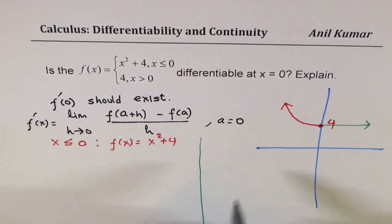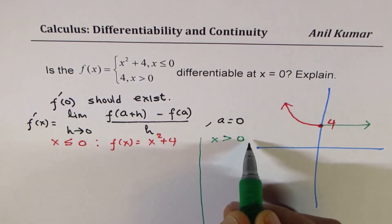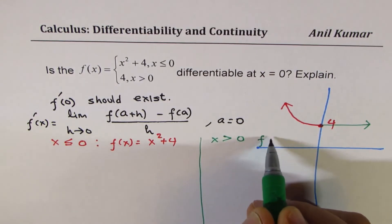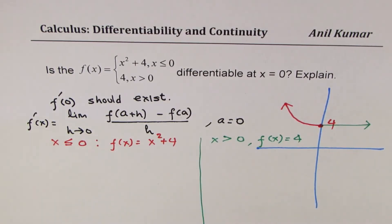And we'll also find the limit when x is greater than 0. And in that case, we know f(x) is equal to a constant function, 4. Is that clear? a is equal to 0.